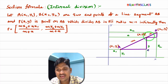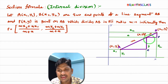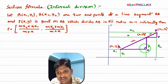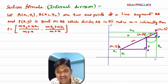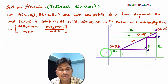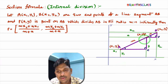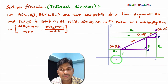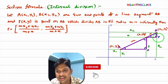I have drawn AC parallel to the x-axis and PD parallel to the x-axis. Now we can observe two triangles: triangle APC and triangle PBD. Both have 90-degree angles. Since AC and PD are parallel, the line AB acts as a transversal, making corresponding angles equal. Therefore, triangle APC and triangle PBD are similar triangles.